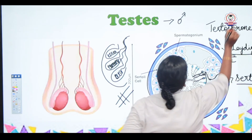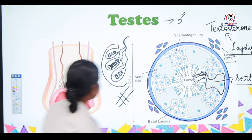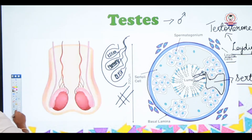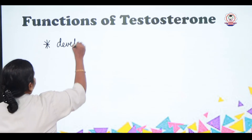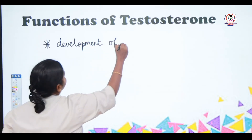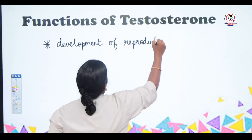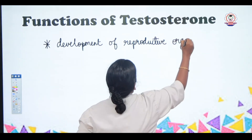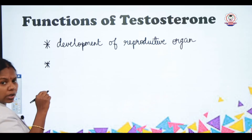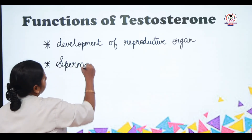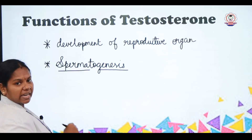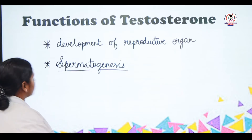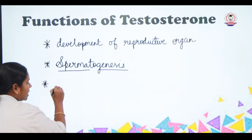Testosterone is a male hormone, secreted by the Leydig cells. The first important function of testosterone is that it is responsible for the development of the reproductive organ. The second important function is that it is responsible for spermatogenesis — genesis means formation, and sperm refers to the male gamete — so it is responsible for the formation of the male gamete. It is also responsible for regulating muscular growth.